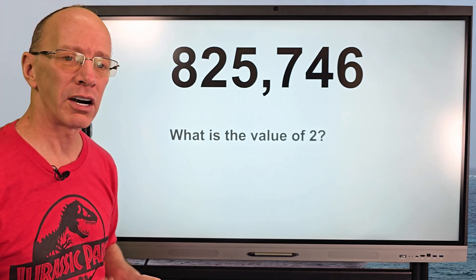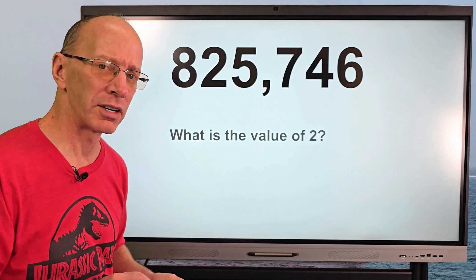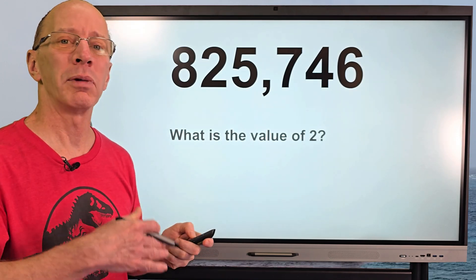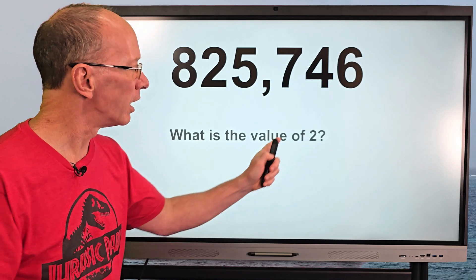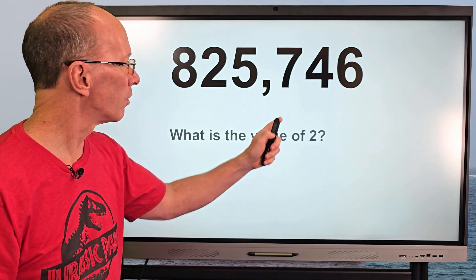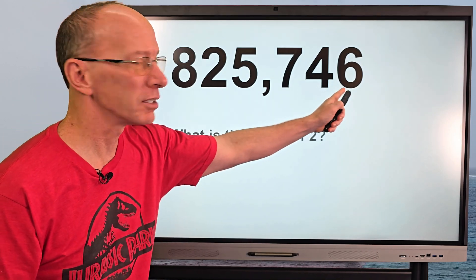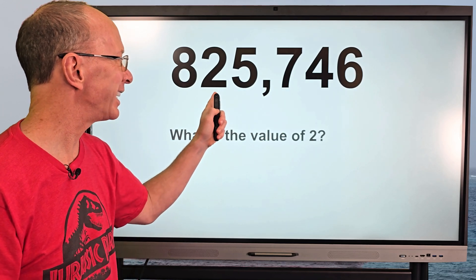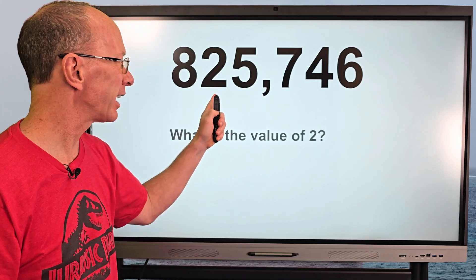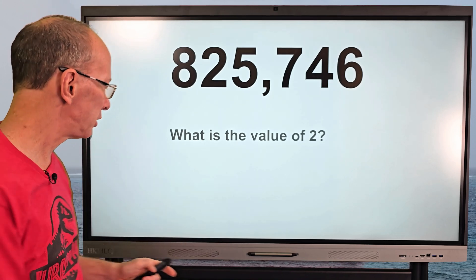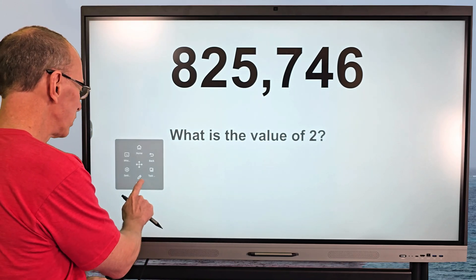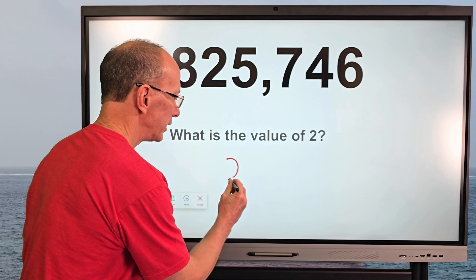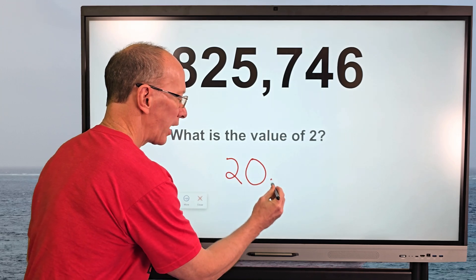What is the value of two? Now this is a different question — we're not talking about place value, we're talking about value, the total value of two. So here's ones, tens, hundreds, thousands, ten thousands. The value of two is going to be twenty thousand.